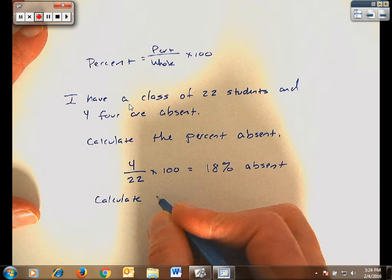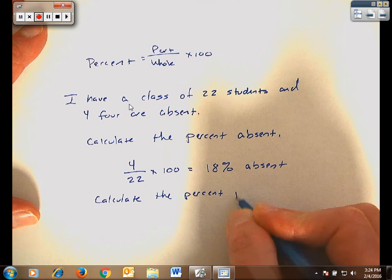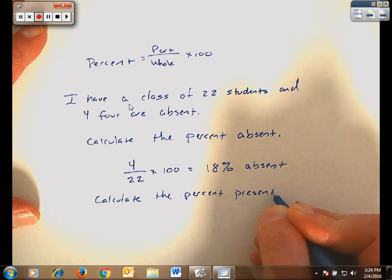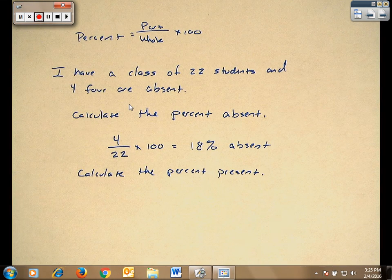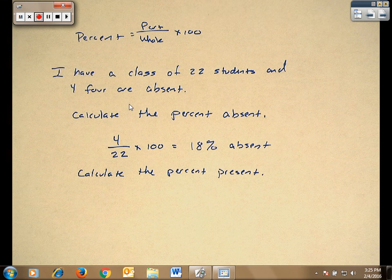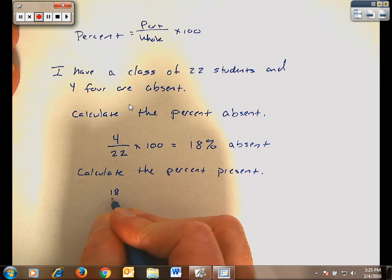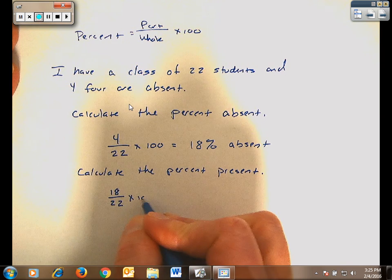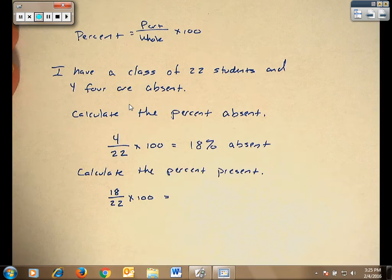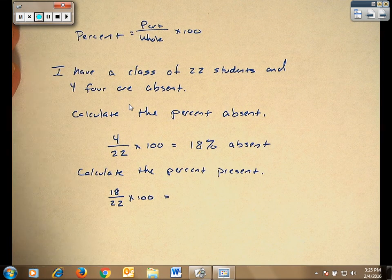Now let's calculate the percent present. I normally have 22 students. I have 4 absent so I do 22 minus 4. I have 18 students present that day. I'm going to divide it by the 22 that I'm supposed to have. So 18 divided by 22, and then I'm going to multiply by 100.